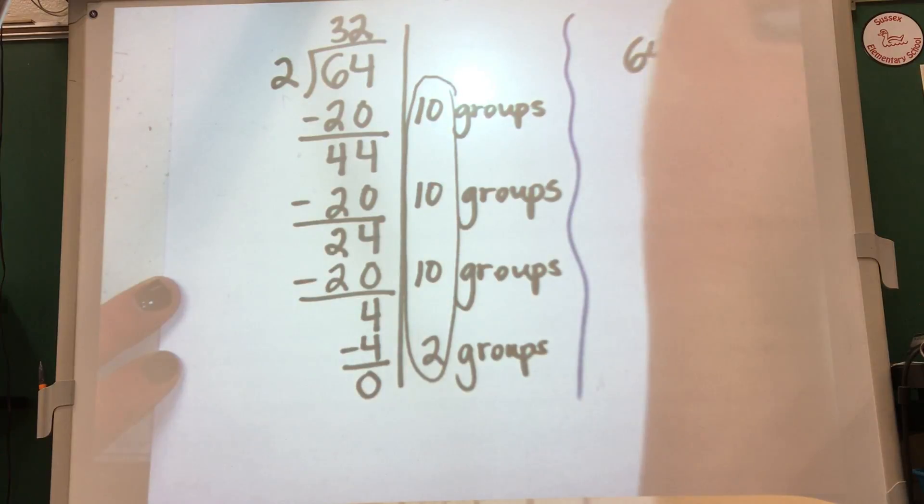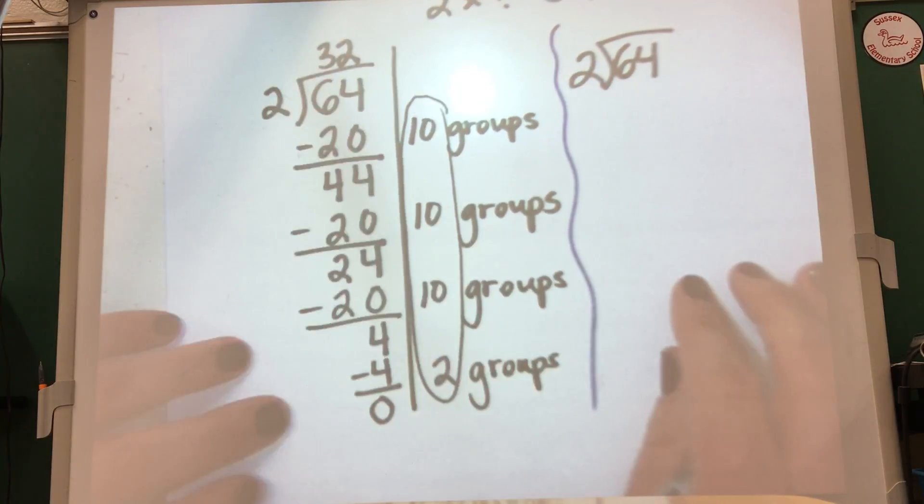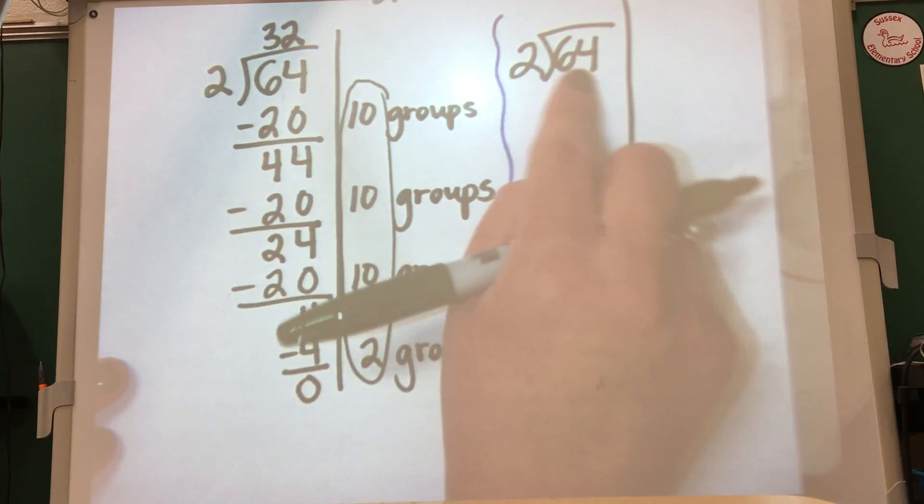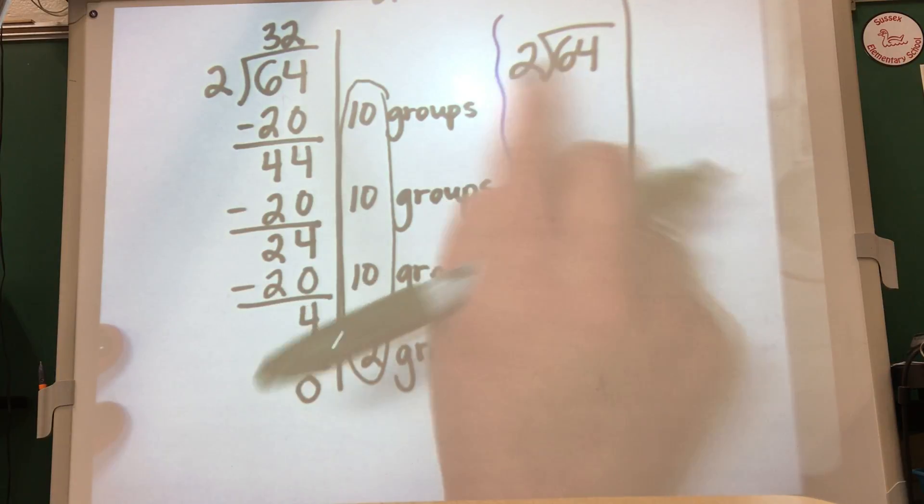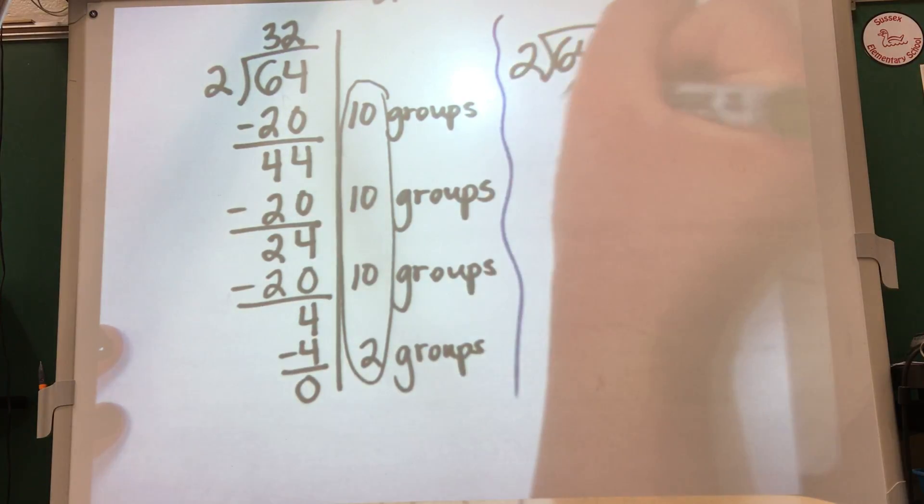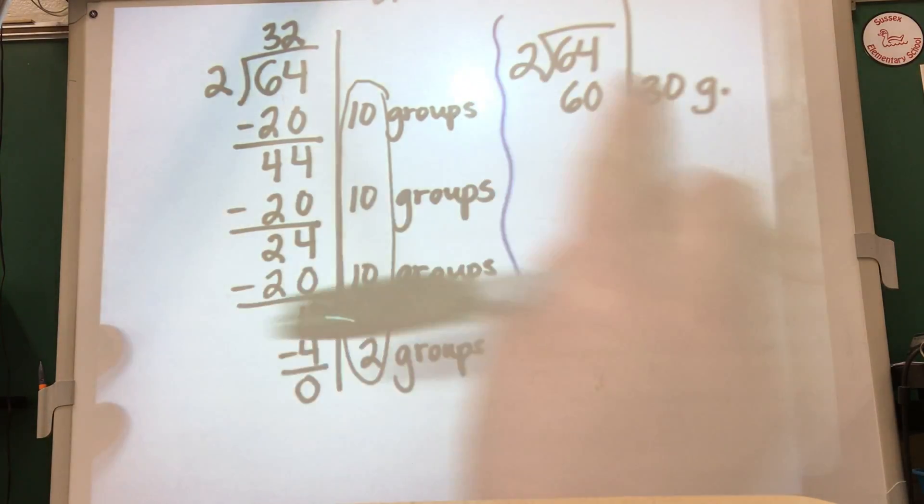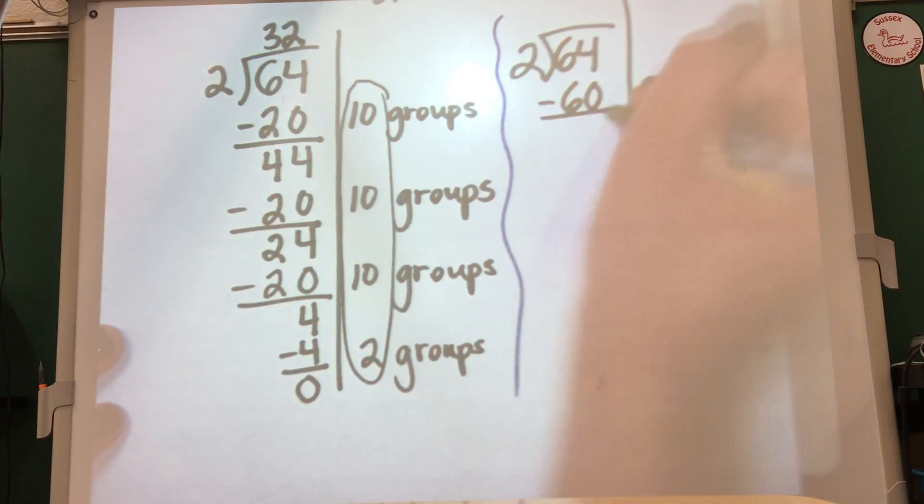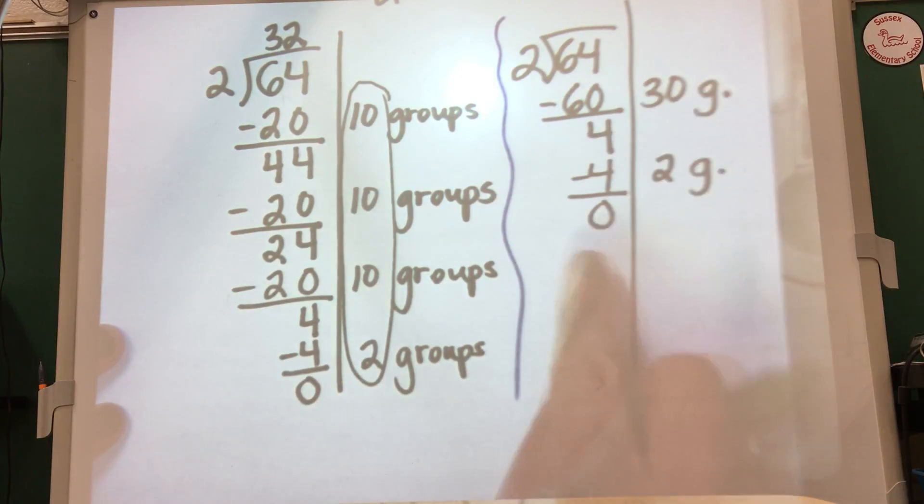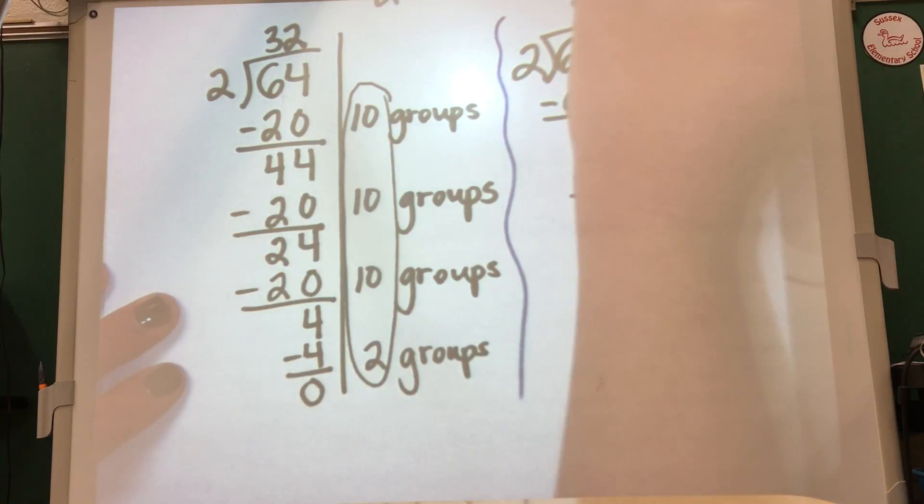So our goal is for students to eventually be able to shorten this down. And when they solve this problem after a while, they'll be able to think: what twos fact do I know that's close to 64? I know 2 times 30, right, 30 groups will give me 60. So if 2 times 30 is 60, I subtract 60, I only have 4 left. Well I know 2 times 2 more groups would be 4. I'm down to 0, much faster than over here, and I still have the same answer of 32.